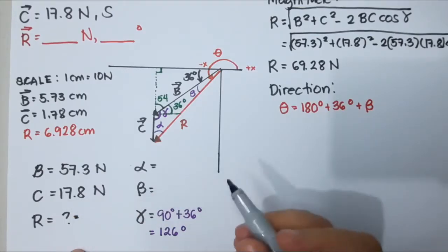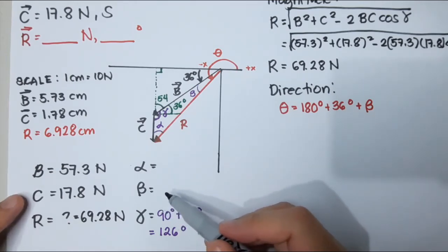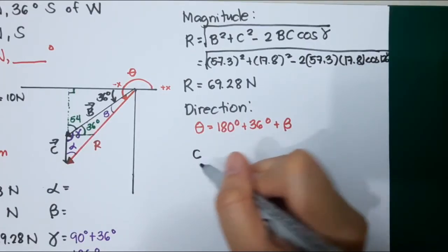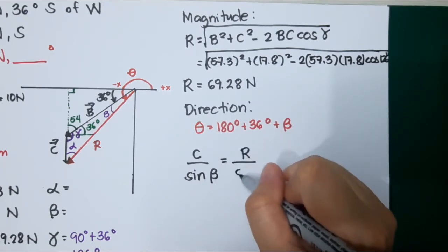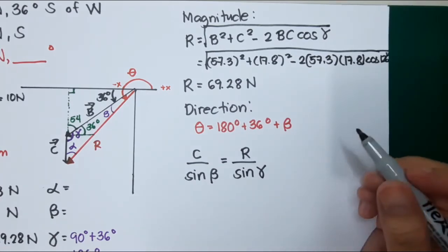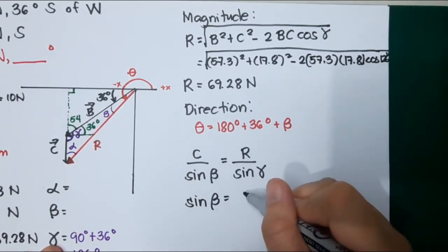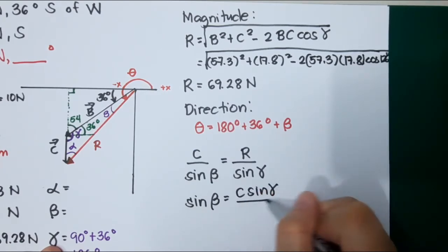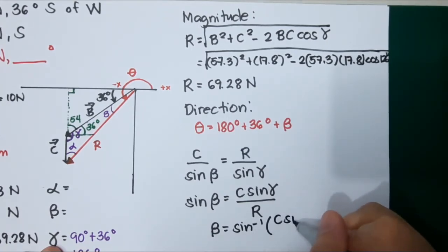We will find again what is beta. Since we know what is R, that is 69.28 Newton, and we're looking for beta, we will have R and C beta. That will be our solution. C vector over sine beta, that is the opposite of C, is equal to R over sine gamma. Sine beta is equal to C sine gamma over R, and beta is R sine C sine gamma over R.